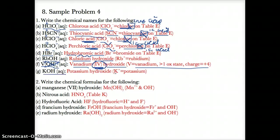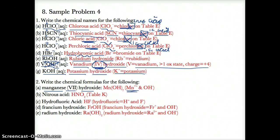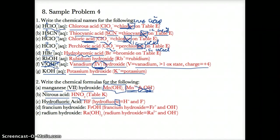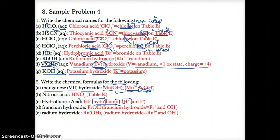For KOH: potassium has only one oxidation state, so name it potassium hydroxide. For number two: manganese(VII) hydroxide has Mn7+ and OH-, so crisscrossing charges gives Mn(OH)7, with OH in parentheses because you have more than one of this polyatomic ion. Nitrous acid is on table K, so write it as HNO2. Hydrofluoric acid has hydro- and -ic, indicating two elements: H+ and F- (fluoride). Crisscross charges to get HF.